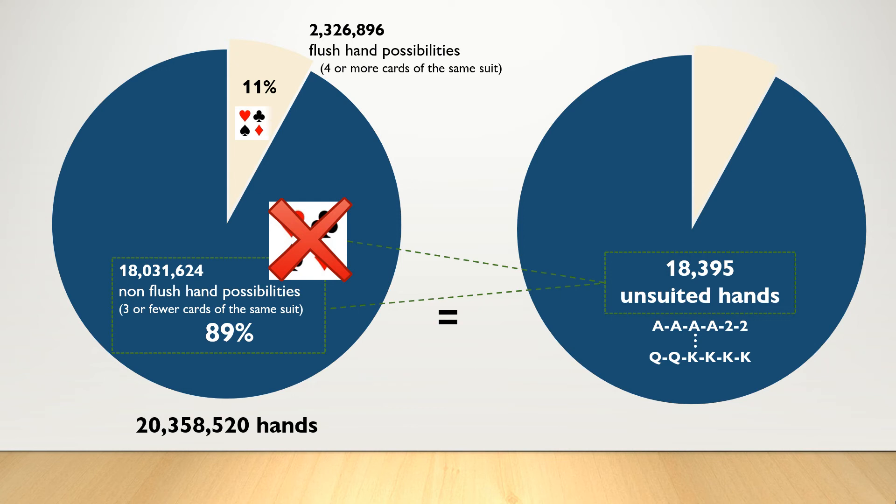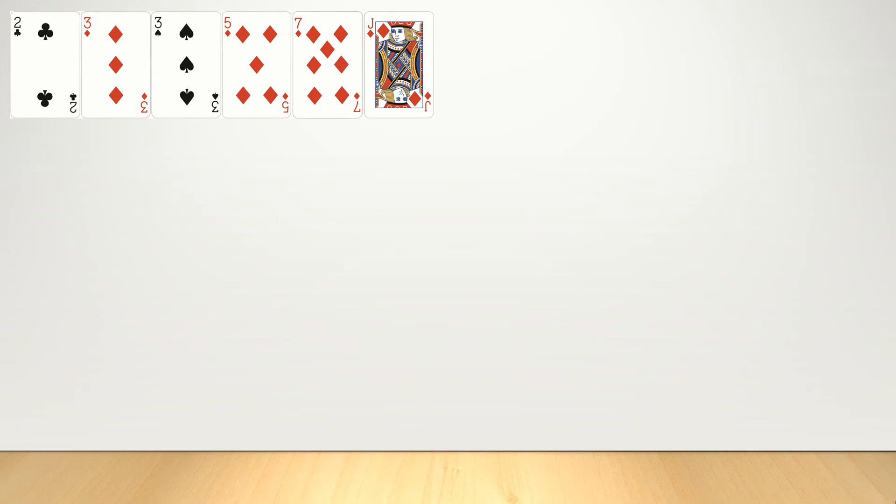So now we know cribbage flushes represent a small proportion of total possible hands. On average, one out of every nine hands will contain a flush. But that doesn't necessarily mean they should be disregarded entirely. So let's look at one example of a hand that contains a flush and see what we should discard. Our hand here is two of clubs, three of diamonds, three of spades, and the five, seven, and jack of diamonds. So we have four diamonds here, which is a flush. Let's see if keeping the flush is our best strategy. And to do that, we'll calculate the expected averages.